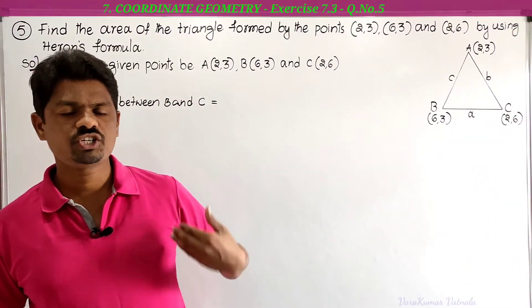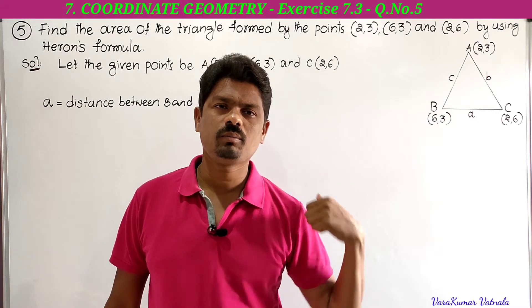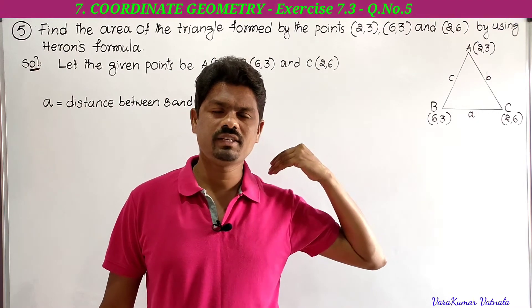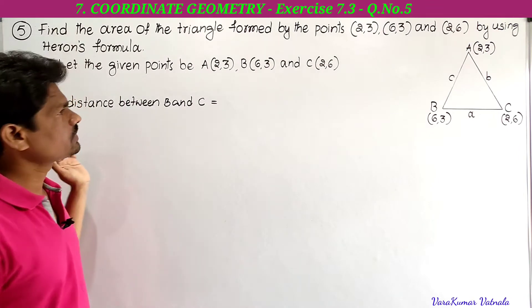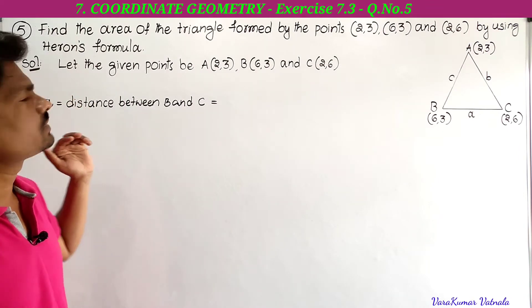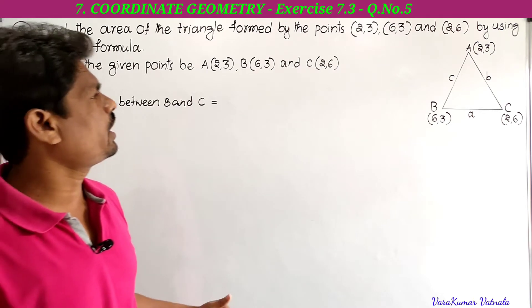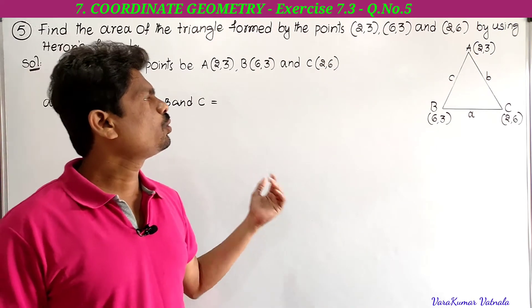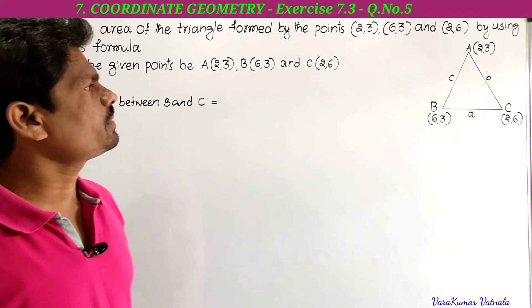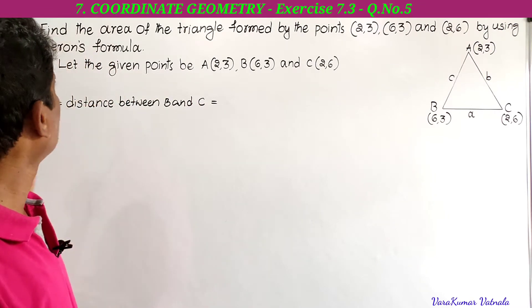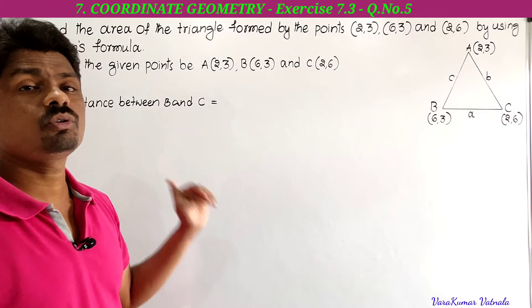Hi, hello, welcome to our channel Learn More Maths. Today we are going to solve a problem from exercise 7.3 — this is the fifth problem. Find the area of the triangle formed by the points (2,3), (6,3), and (2,6) by using Heron's formula.